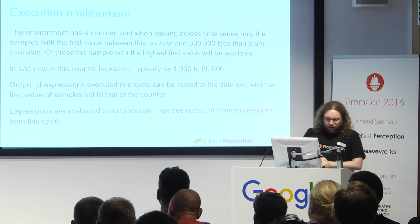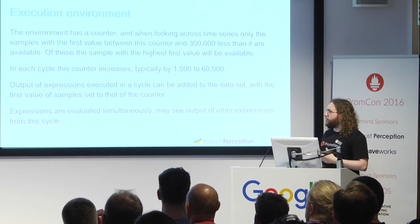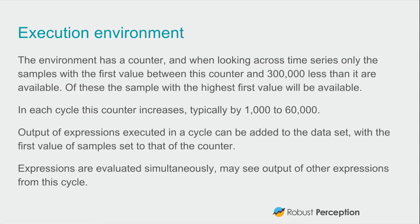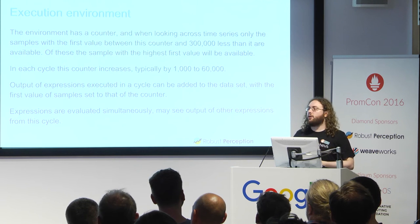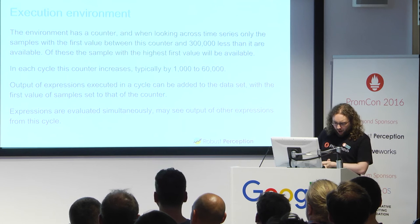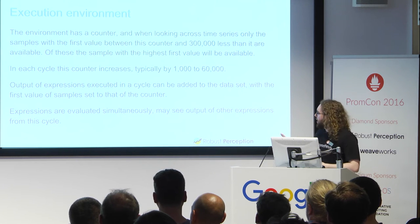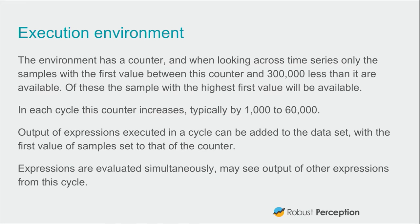The execution environment is a little bit weird — I'm not sure where this came from. There is a counter, a single counter. When you're looking up time series, it looks at all the time series and looks for sample values between the value of the counter and the counter minus 300,000. Out of those, the highest int64 will be the one presented to you. In each execution cycle — because it runs in cycles — this counter increases by a number that's usually between a thousand and 60,000. You can execute expressions statelessly and also statefully and put the answers back in. However, there is no ordering on those expressions and they may refer to ones in the current cycle or the previous one, so there's no atomicity here at all.